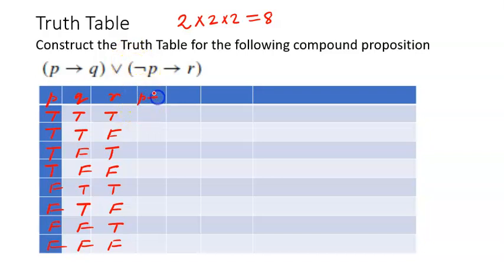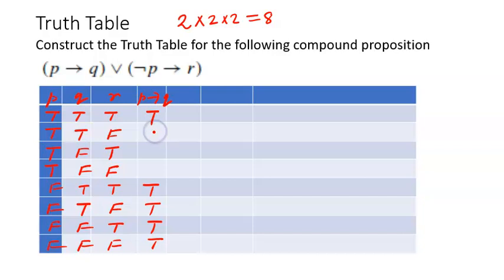Now we write p→q. Since p is false in the last four rows, p→q is automatically true there. In the first four rows, p is true, so p→q follows q's values. The column for p→q is: true, true, false, false, true, true, true, true. I would like you to pause here and complete the rest of the truth table yourself. If you are not able to complete it, put a comment in the comment box and we will start with the same problem in the next video.